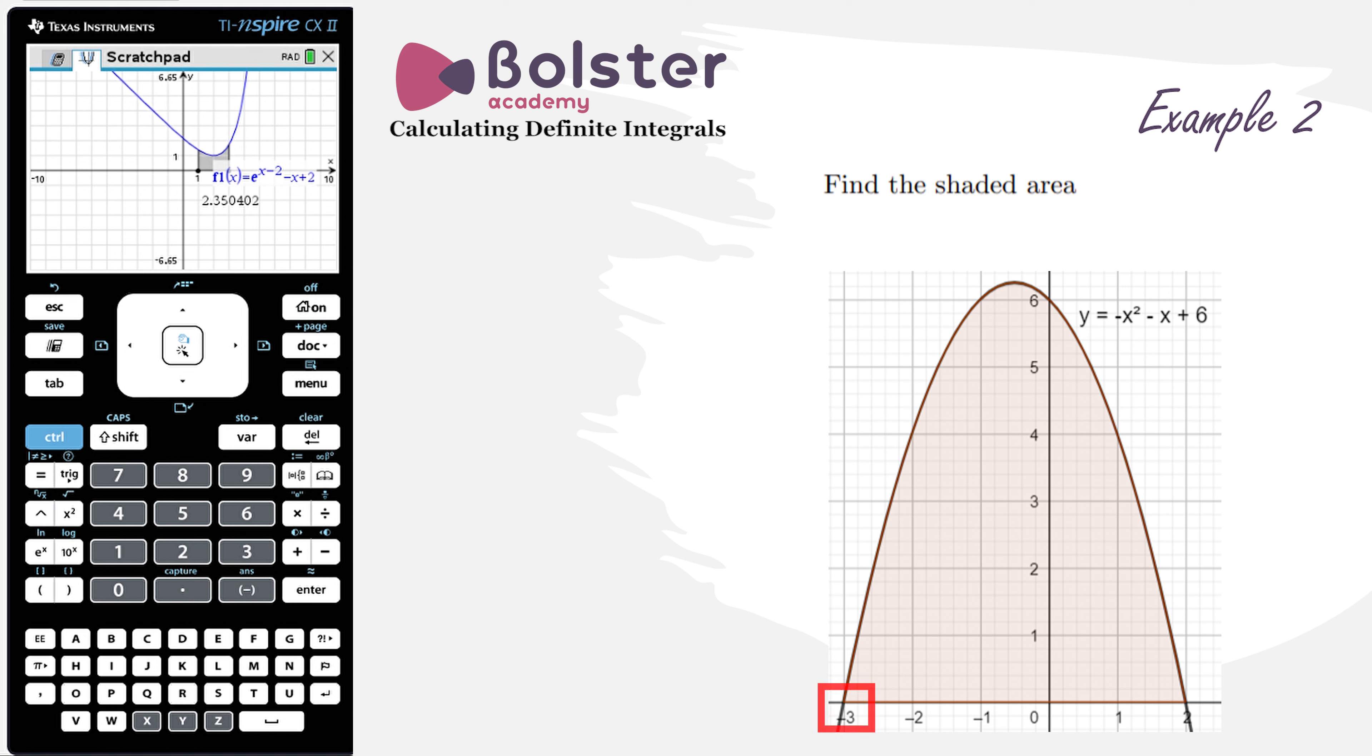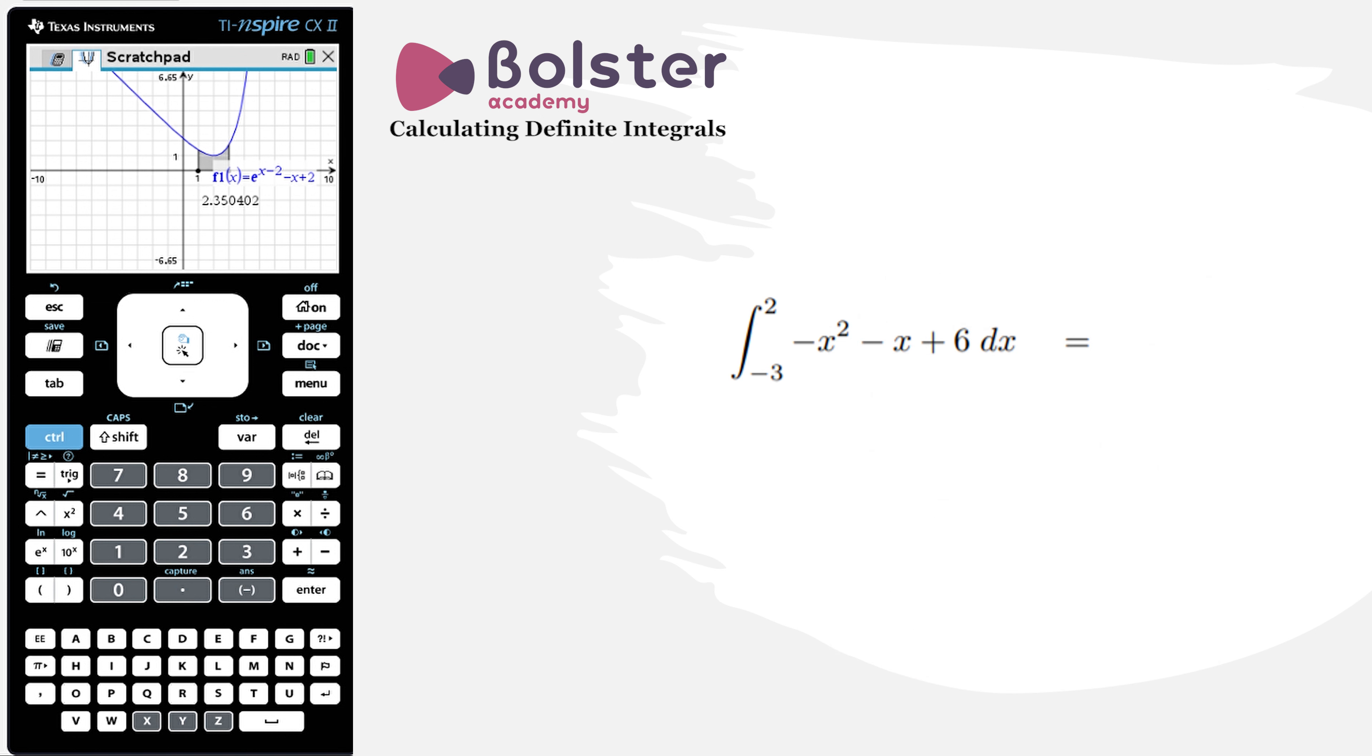I can see that I'm starting at minus 3, so my lower limit has to be minus 3. And I can see that the area ends at exactly 2, so my upper limit would have to be 2. So that means this area can be represented by the integral from minus 3 to 2 of minus x squared, minus x, plus 6, dx.